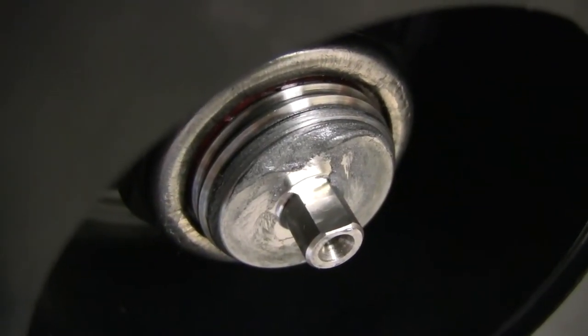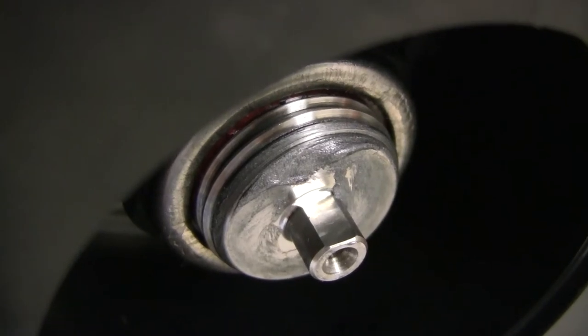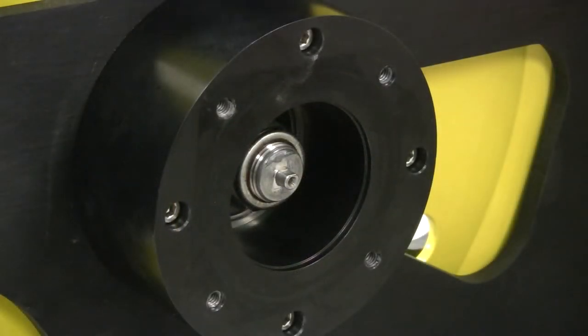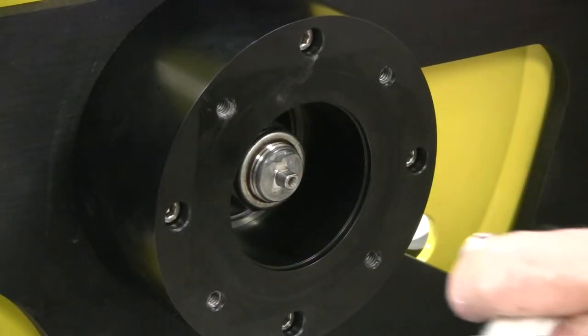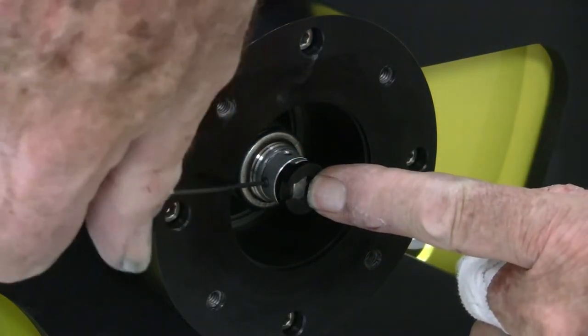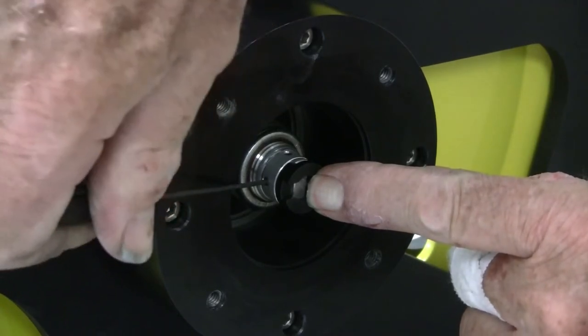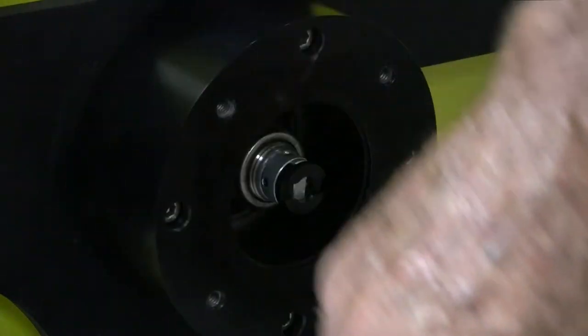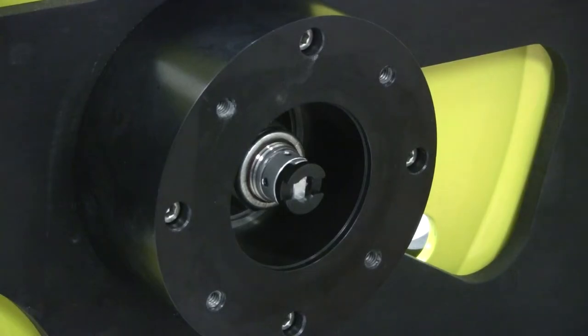Note that the small end of the shaft has a flat side. Replace the coupling on the small shaft. Align one of the set screws with the flat side of the shaft. Firmly tighten both set screws.